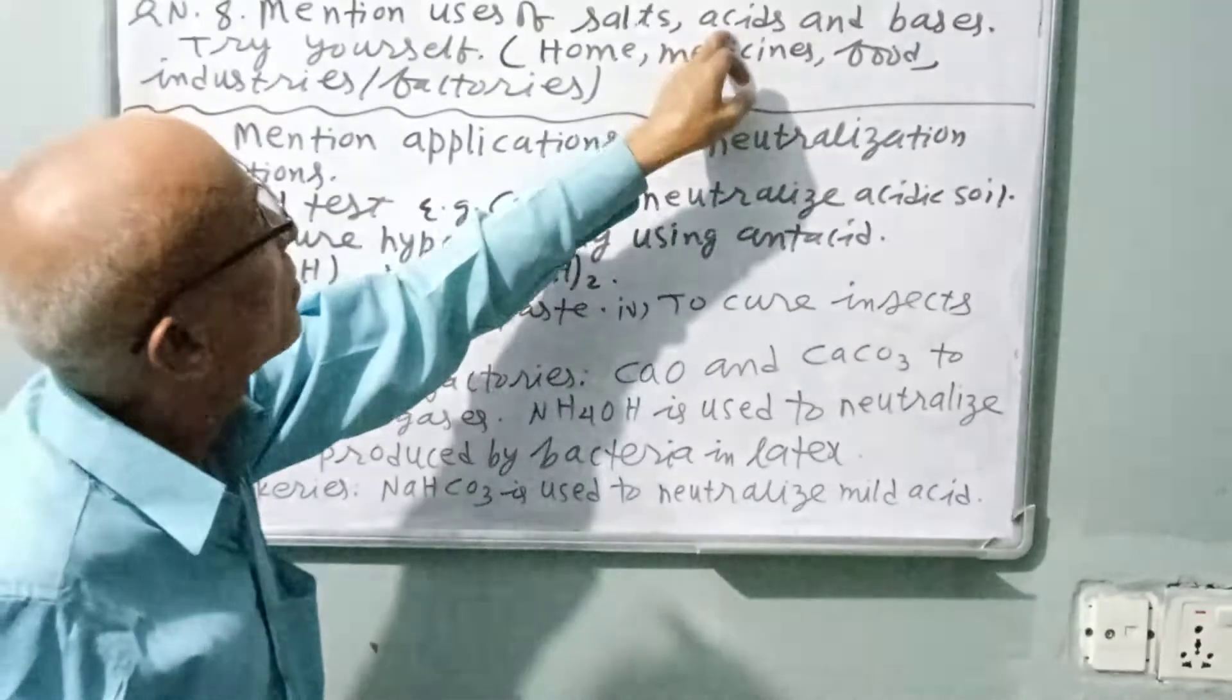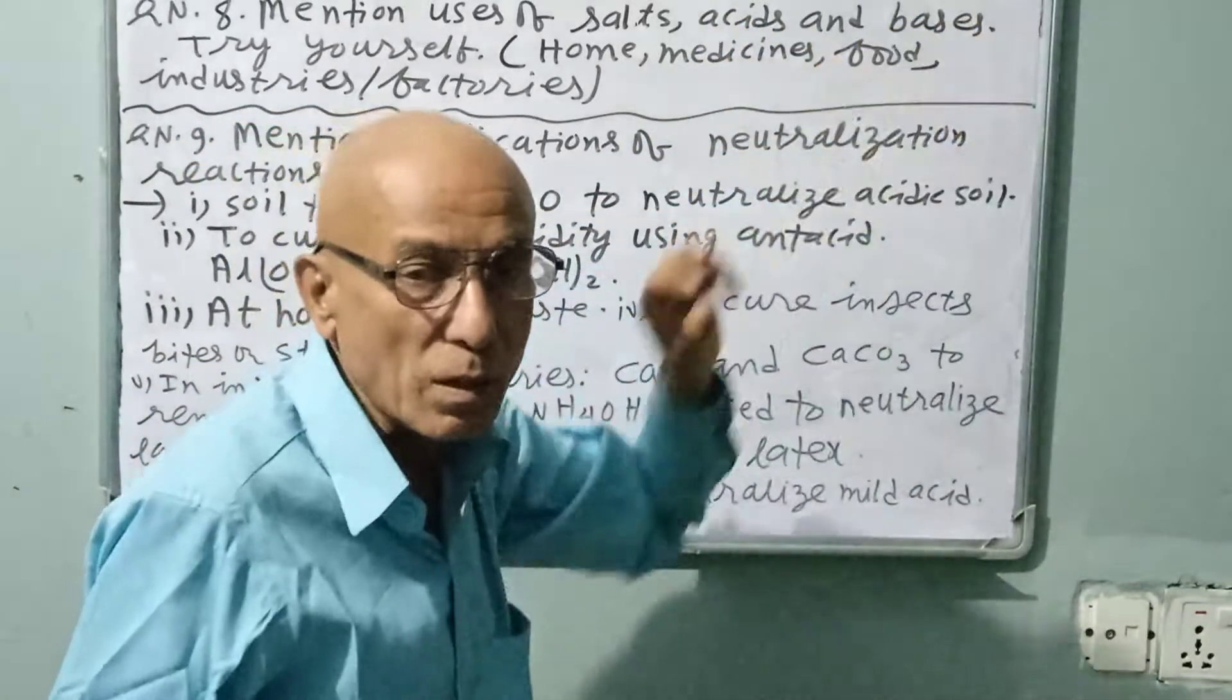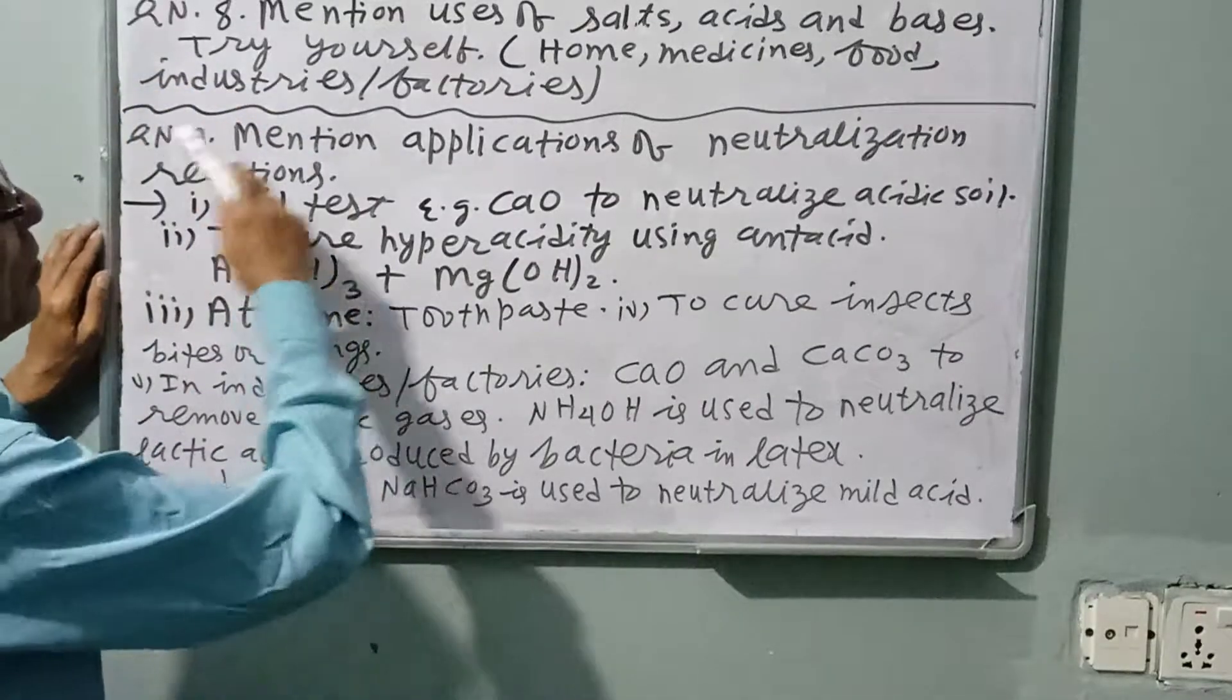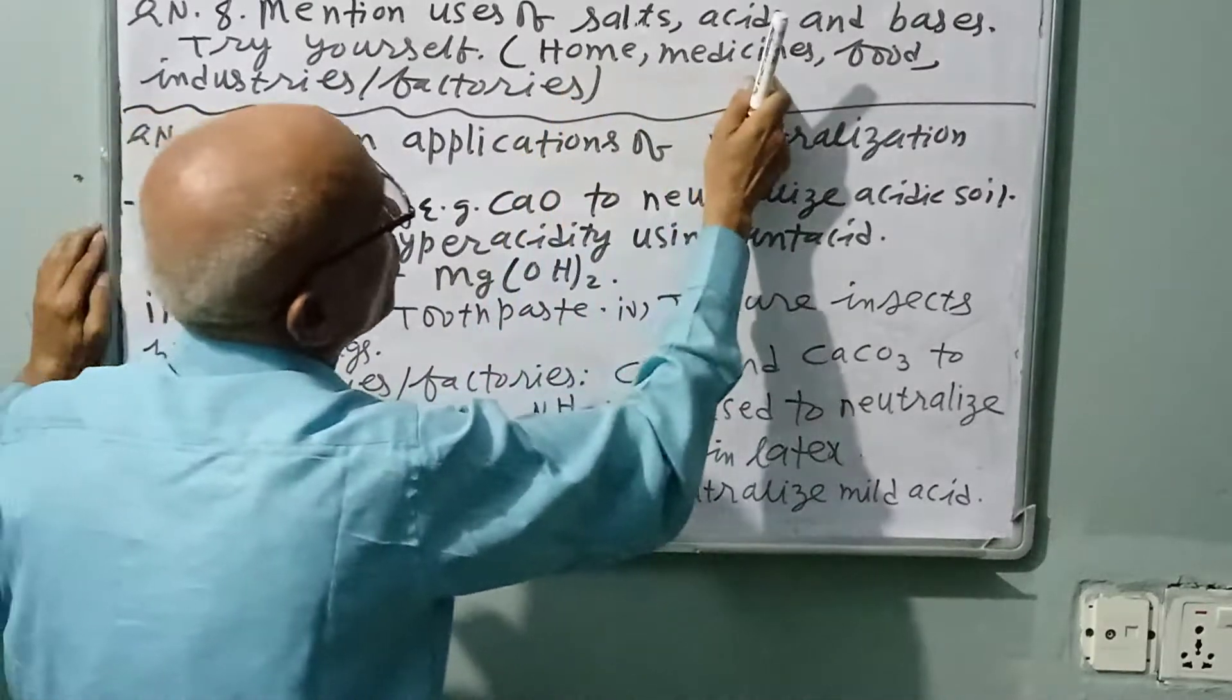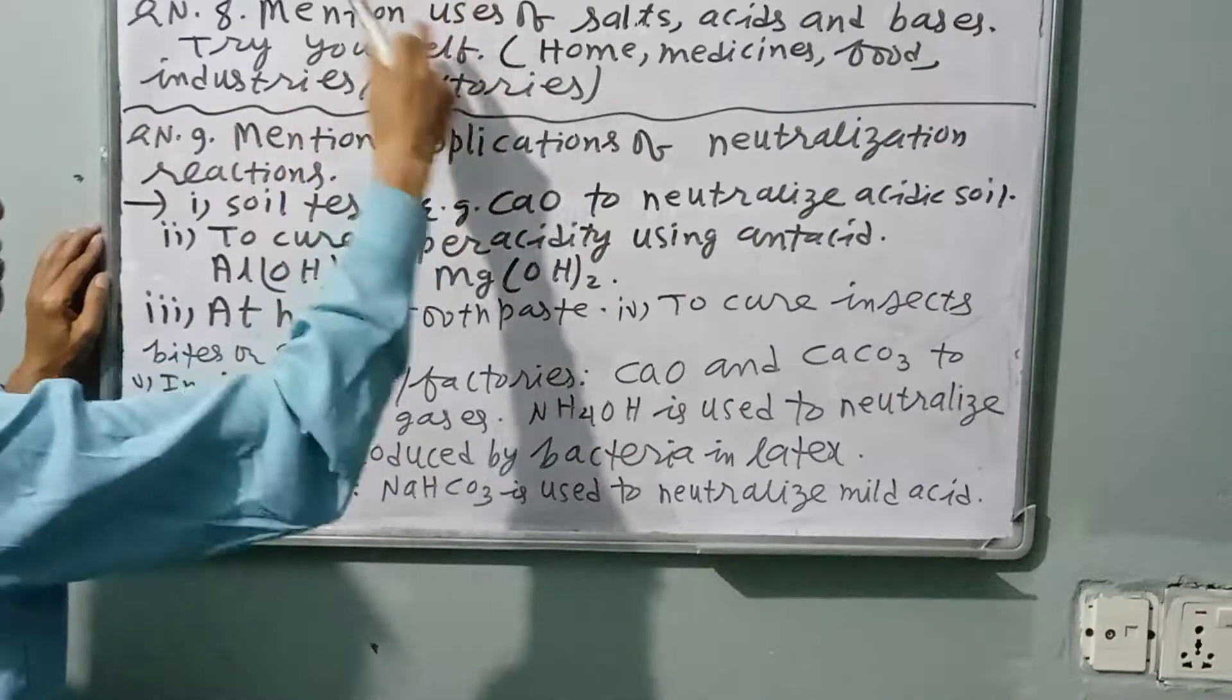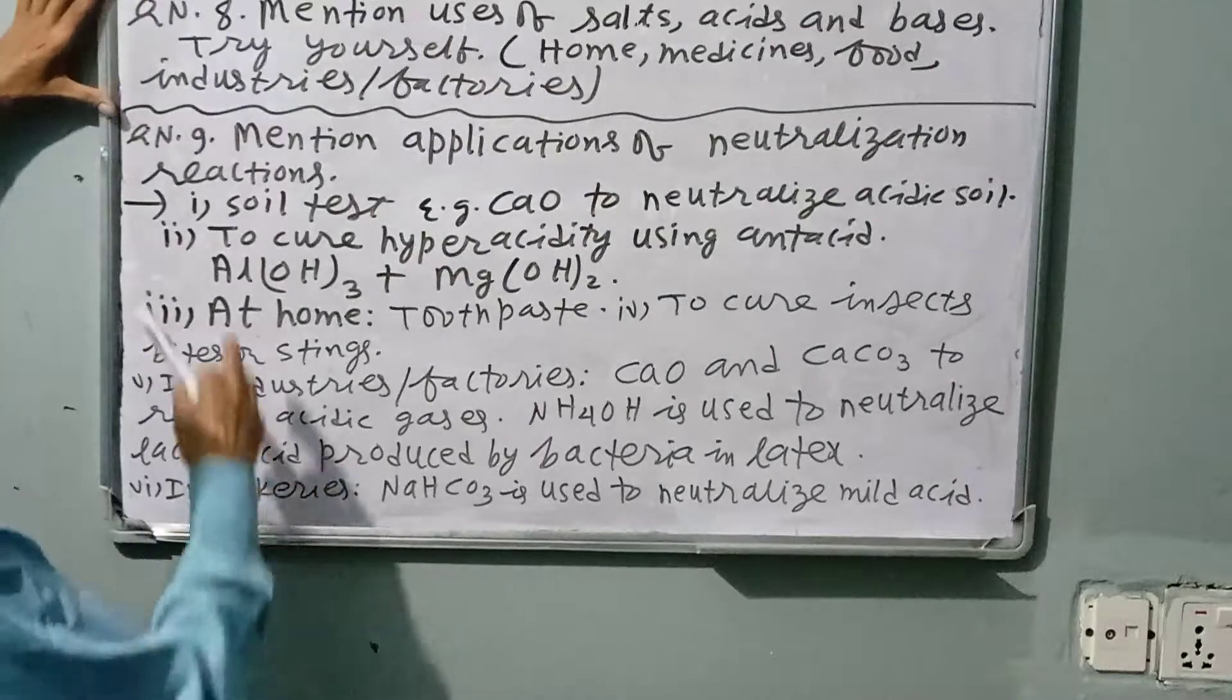Acids generally are very useful to produce salts in factories and industries, and in laboratories as lab reagents. Bases are used generally to produce soap, chemicals, fertilizers, etc. Try yourself: at home, to make medicines, in food industries and factories. Salts, acids, and bases are very useful.